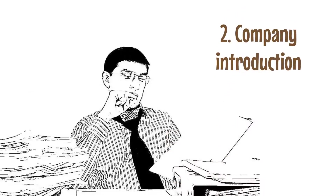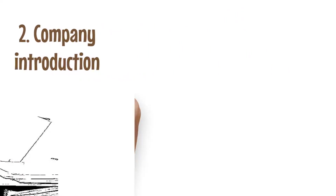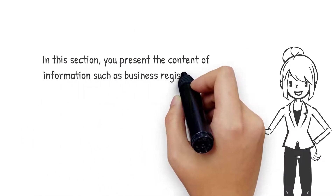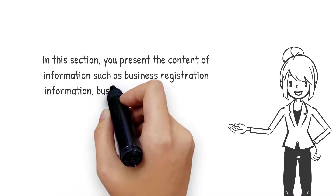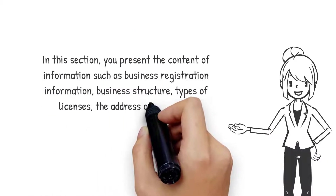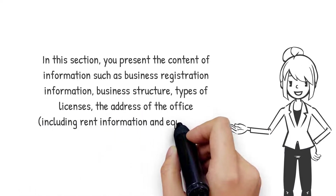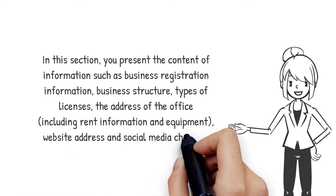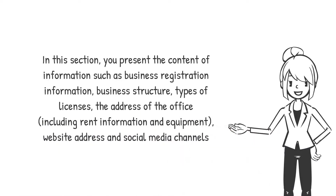2. Company Introduction. In this section, you present the content of information such as business registration information, business structure, types of licenses, the address of the office, including rent information and equipment, website address, and social media channels.